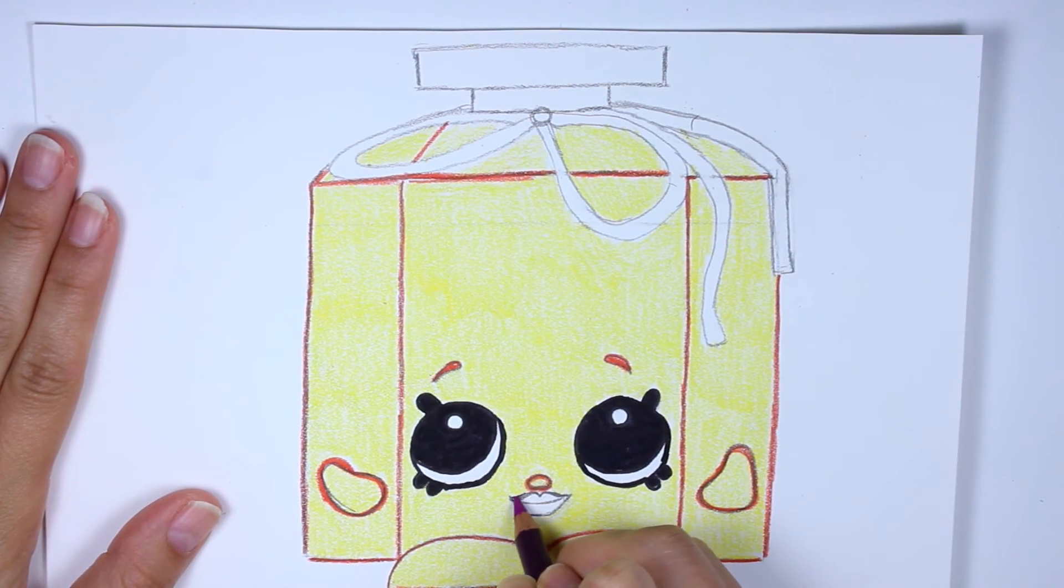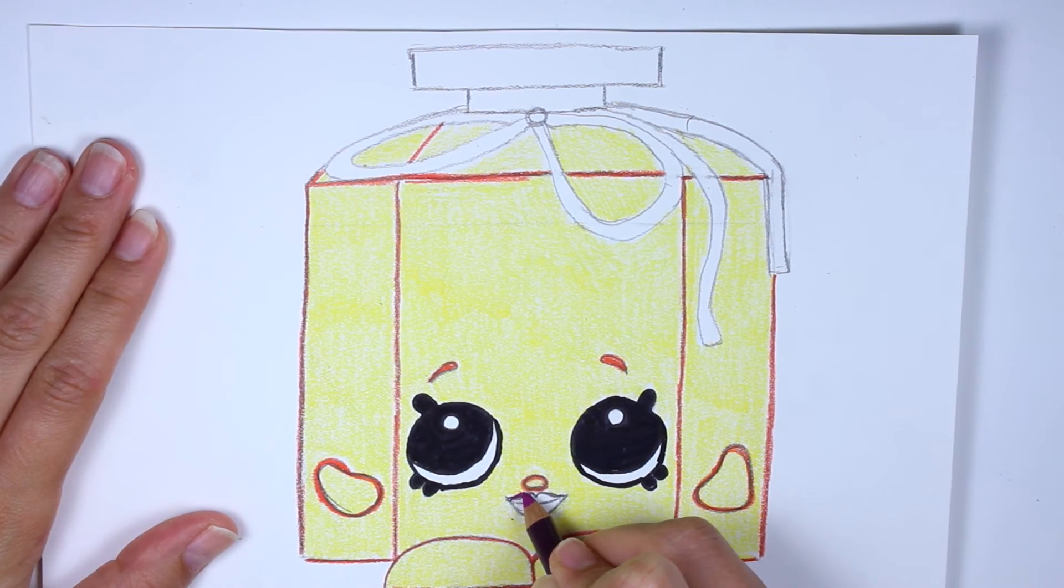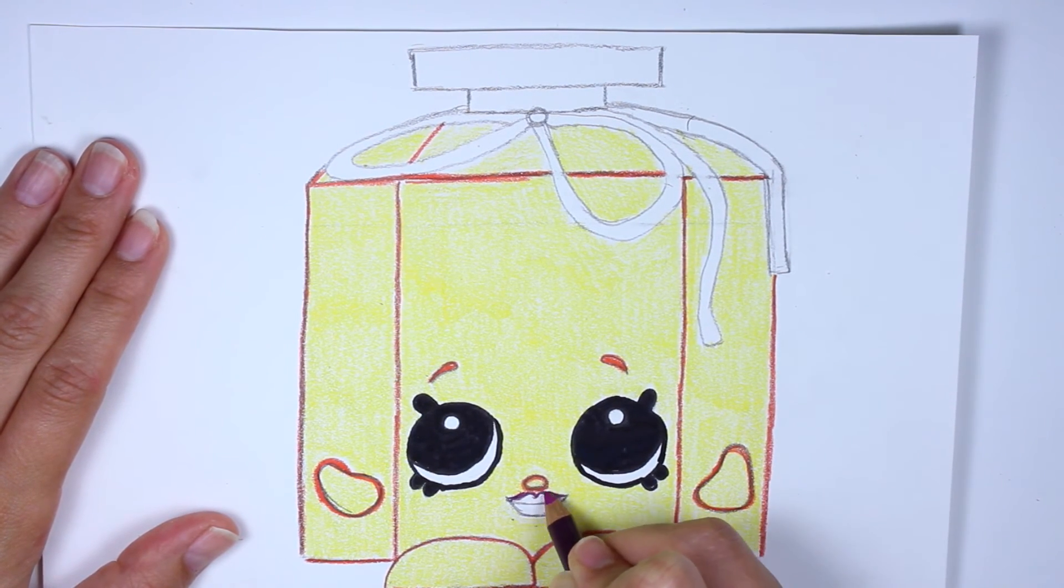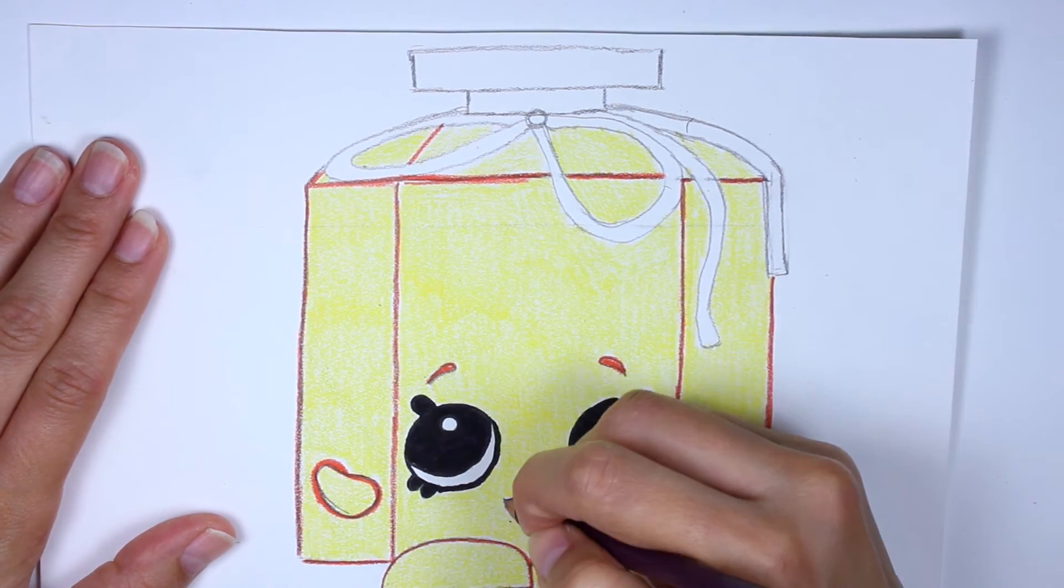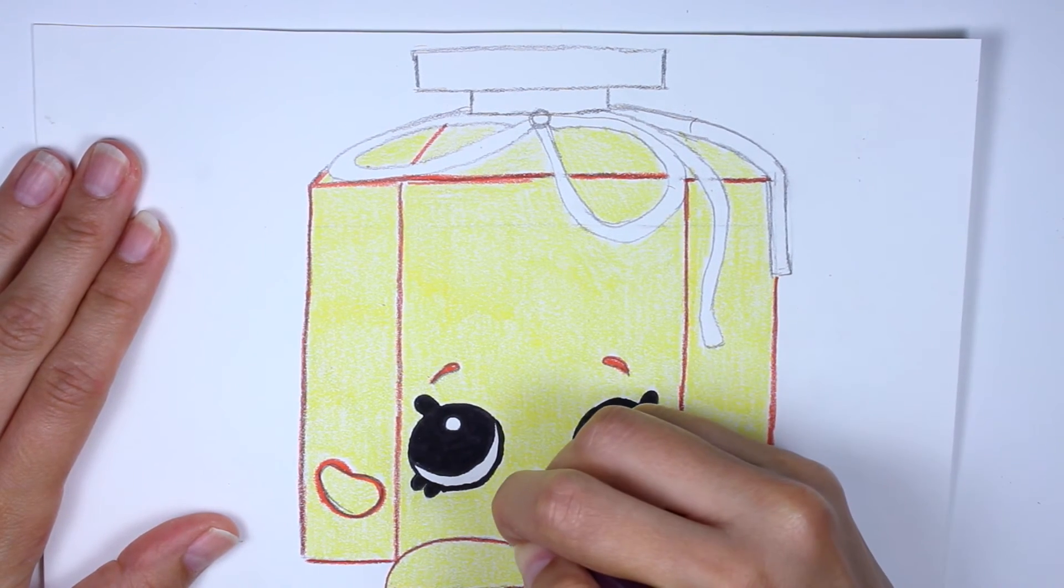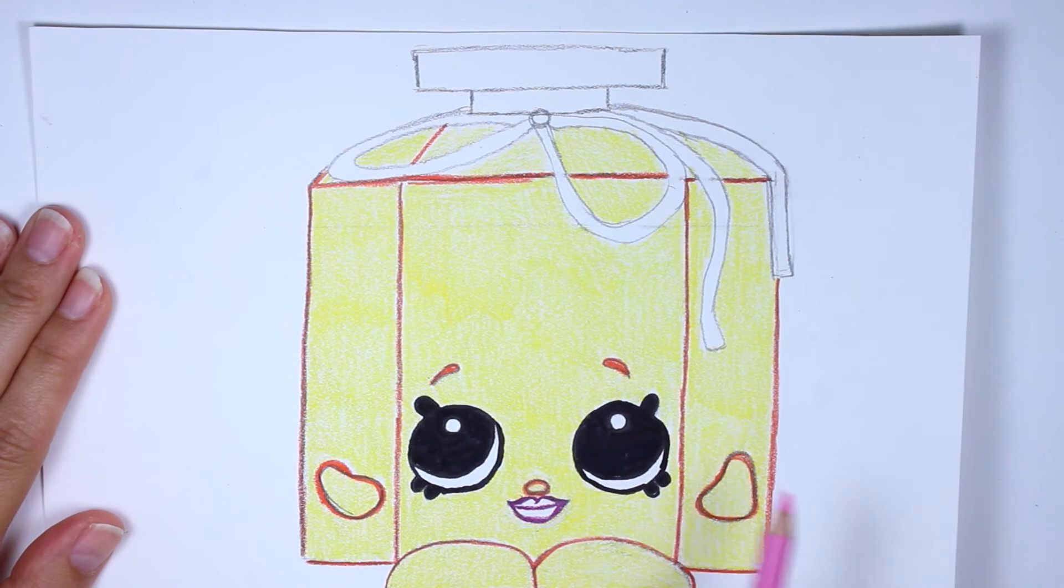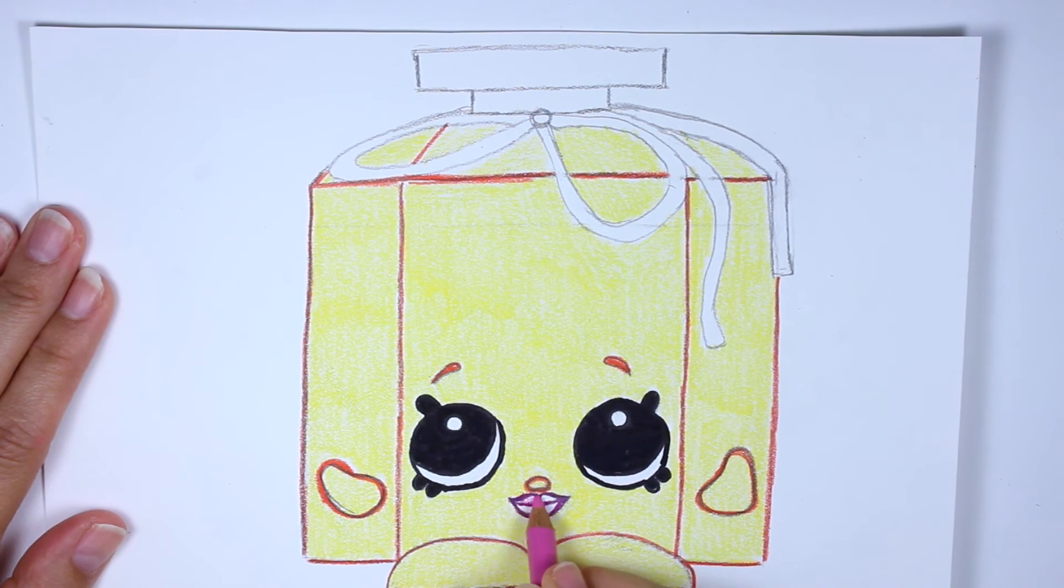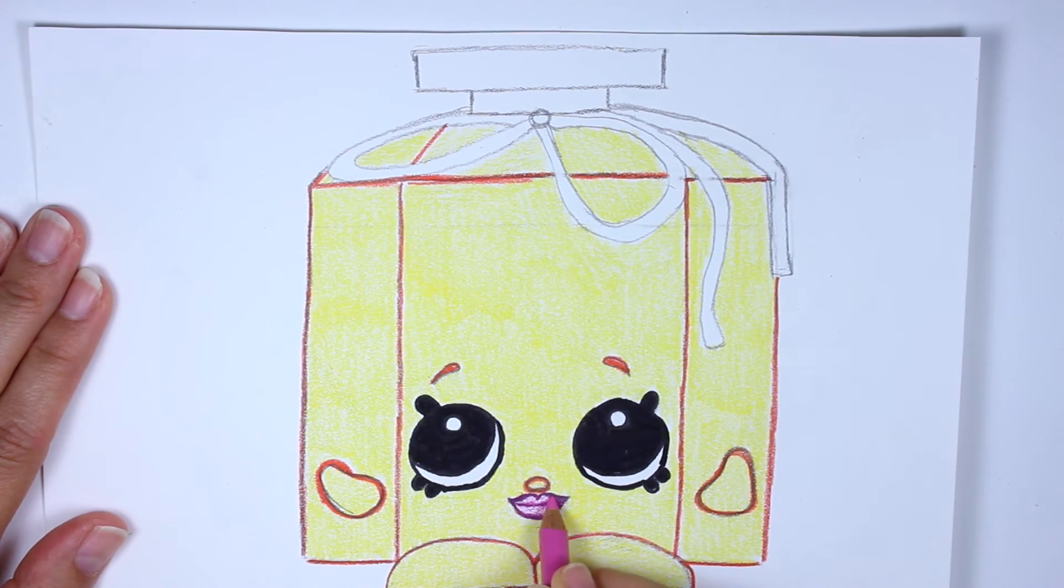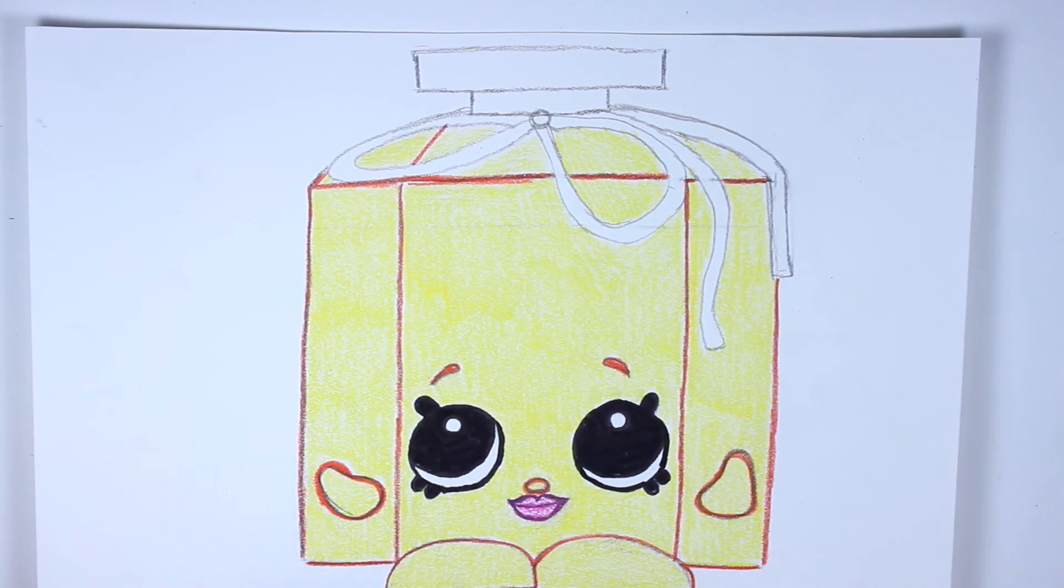Now we're going to take our dark purple, and we are going to trace these lips of hers. Just trace them real nice and dark. Now we take our pink and we're going to color her lips in. Just like this. Perfect.